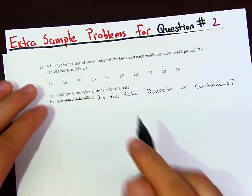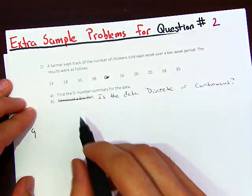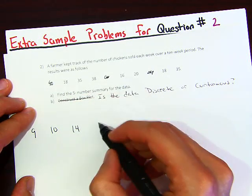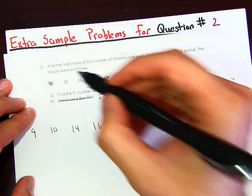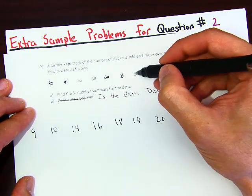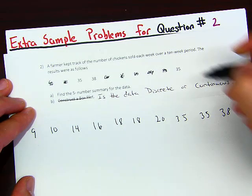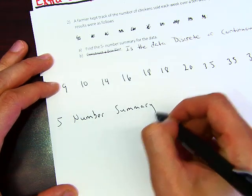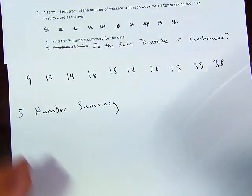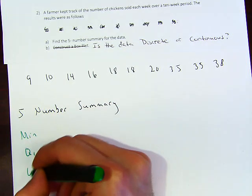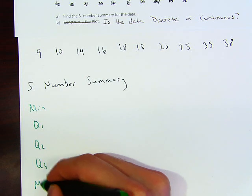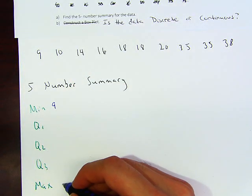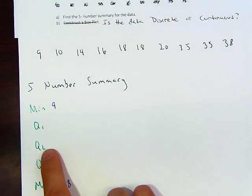To find the five number summary, the first step is to put the data values in order. The ordered values are: 9, 10, 14, 16, 18, 18, 20, 35, 35, 38. The five number summary has min, Q1, Q2, Q3, and max. The minimum is 9 and the maximum is 38.